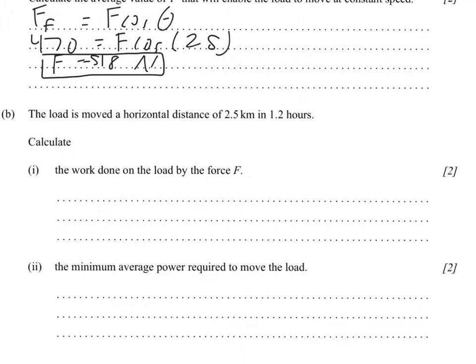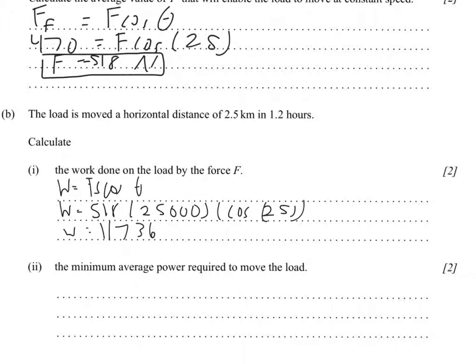So if we set up the equation W equals Fs cosine theta, we just solved for F. So W equals 518 times s, which is 2.5 kilometers, which is equal to 2500 meters times cosine of 25 degrees. And this gives you a work of 1173698 joules, which is approximately equal to 1.2 megajoules.